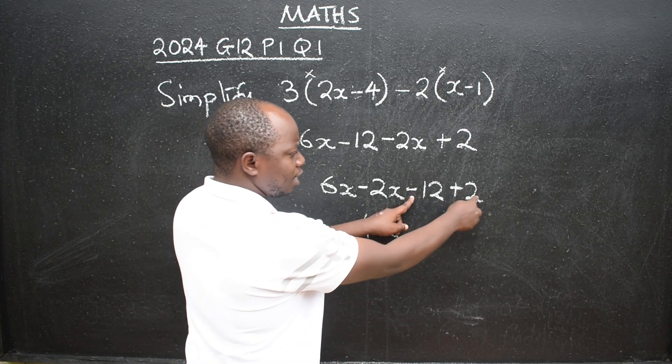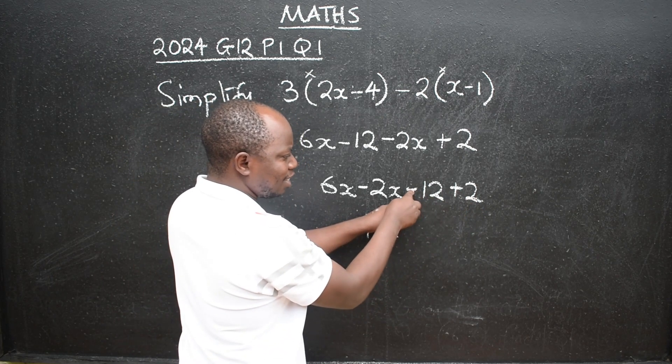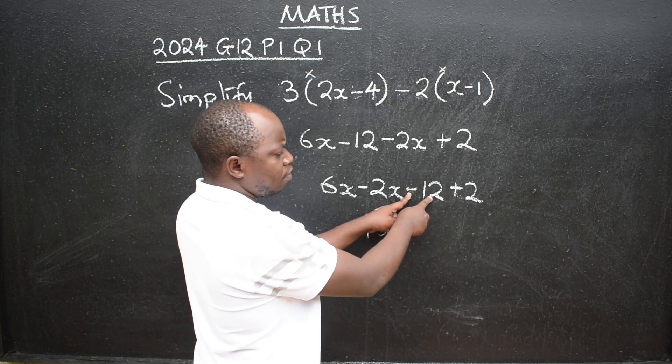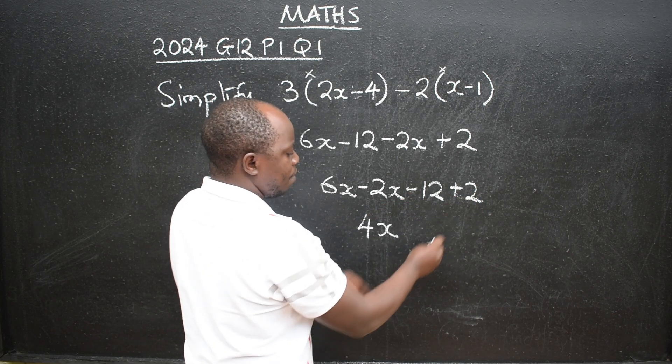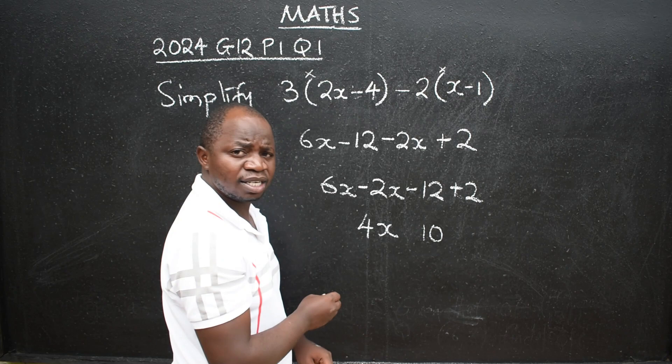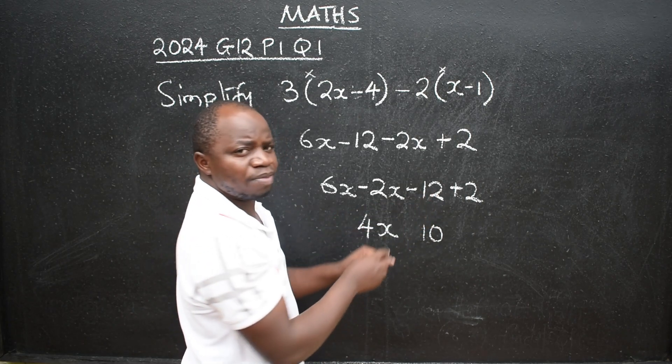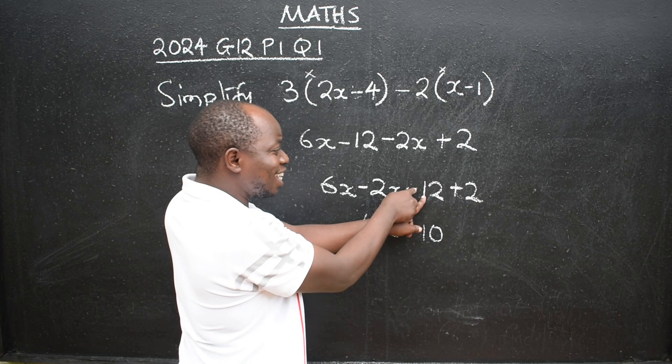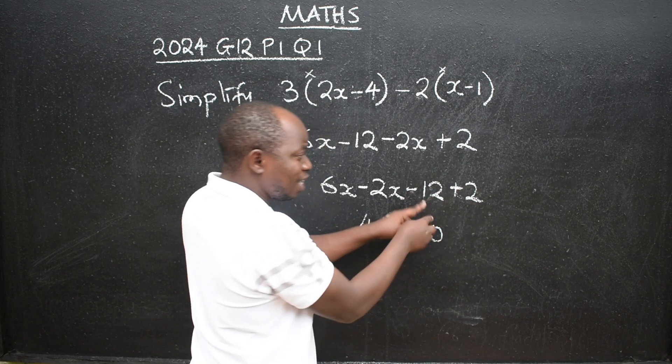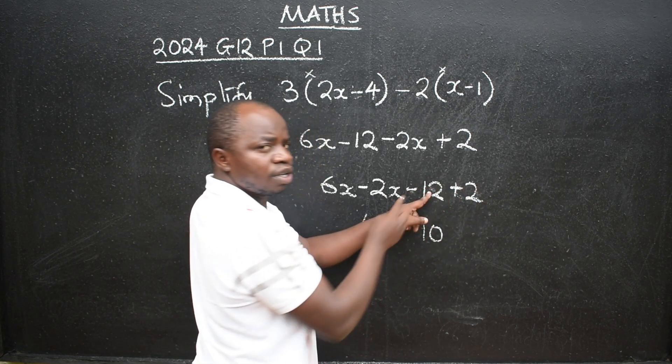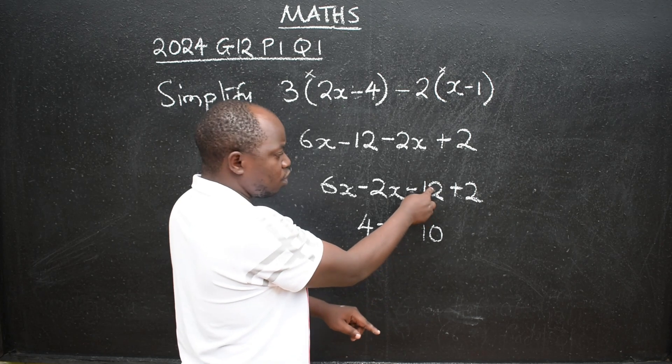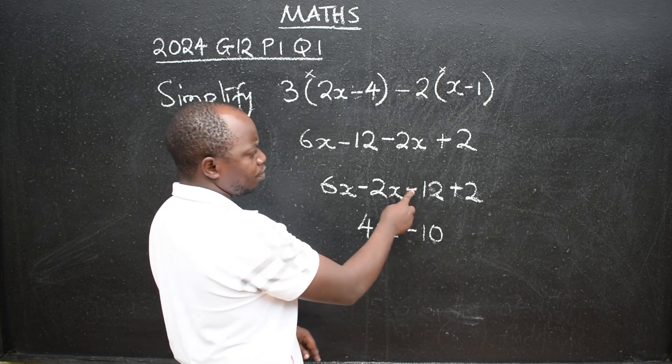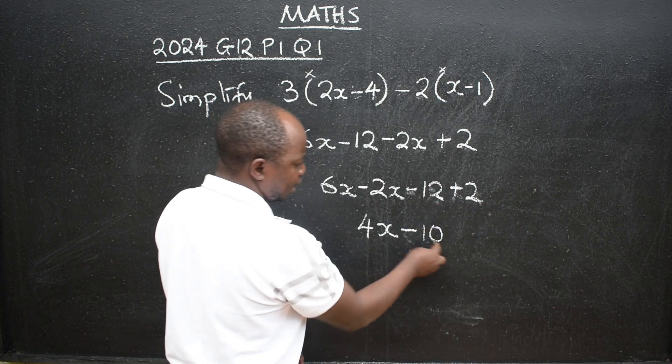Then here, negative 12 plus 2. Different signs, negative, positive. You have to subtract. 12 minus 2 will be a 10. Then get the sign from the bigger number. 12 and 2, which one is big? I'm not saying negative 12 and positive 2. I'm saying 12 and 2. It is 12, right? 12 has got negative. So the answer is negative 10. So negative 12 plus 2 is negative 10.